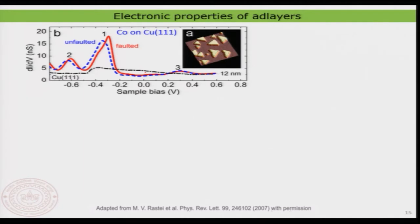In the previous class we looked at the tunneling spectrum of a copper 111 surface or a silver 111 surface, and we saw that it has a surface state only. Keep in mind that we are always measuring the tunneling spectrum near the Fermi level — some electron volts below and some above. For copper, silver, or gold, the density of states is roughly constant in that range, so you only see the surface state.